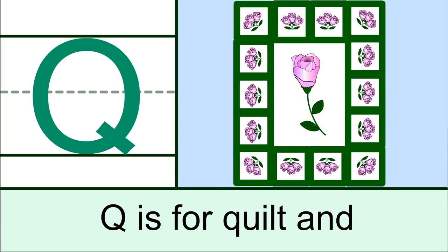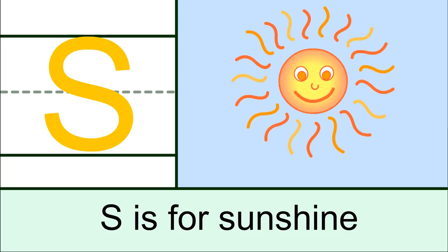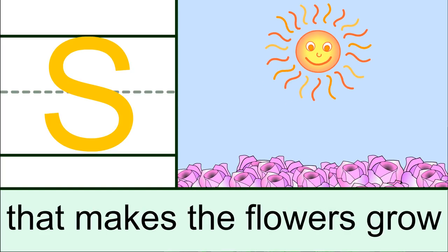Q is for quilt and R is for rose, S is for sunshine that makes the flowers grow.